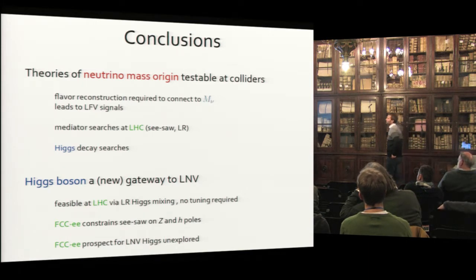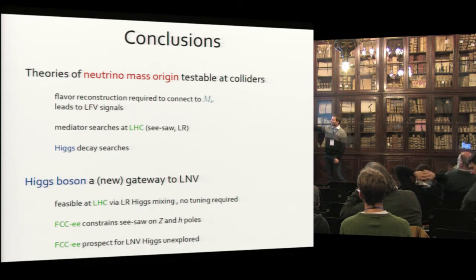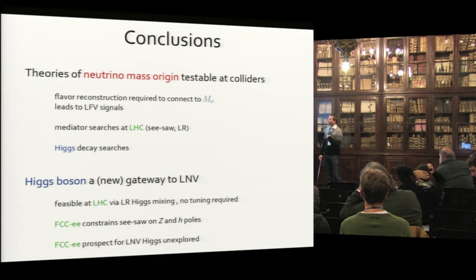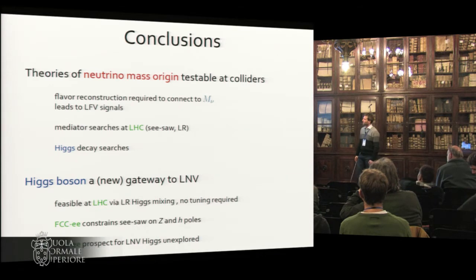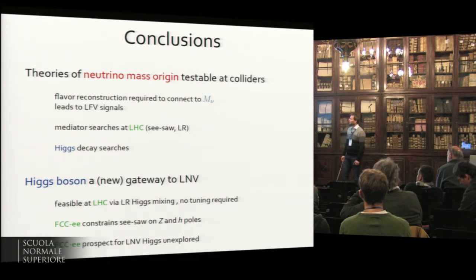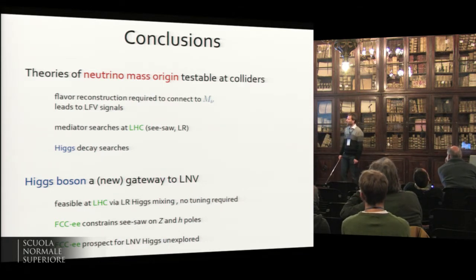To conclude: there are ways to test theories of neutrino mass at colliders, and one would hope to reconstruct all flavor states to connect to neutrino masses, which naturally leads to lepton flavor violation signals. There exist a number of searches for these mediators at the LHC, and in particular searches in the context of Higgs decays. We are proposing another one to look for lepton number violation in the final state — a new gateway to lepton number violation. It seems feasible at the 13 TeV LHC without any particular tuning of couplings, and prospects for the FCC-ee remain unexplored but could be promising.